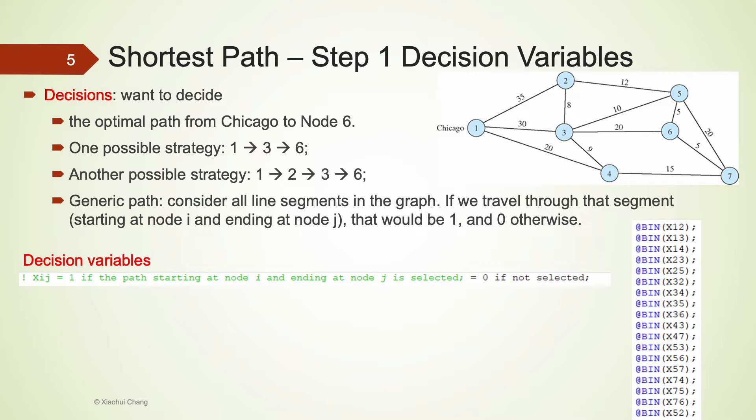I'm going to use x12 for the line segment 1 to 2. If the path passes through this line segment from 1 to 2, x12 would be 1. If the path does not pass through this line segment, x12 is going to be 0. As you can see, the x's only take values of 1 or 0, so they are clearly binary variables. When we define them in lingo, be sure to use @BIN and end each line with a semicolon.